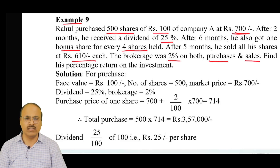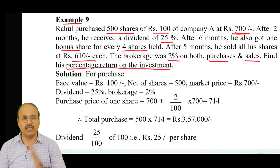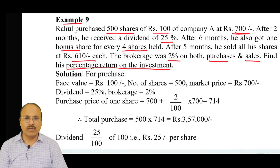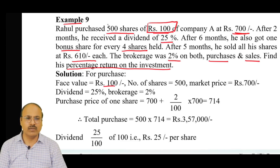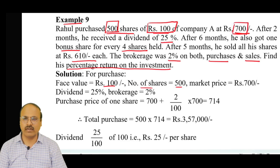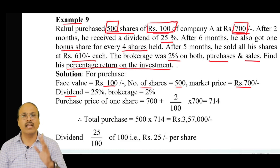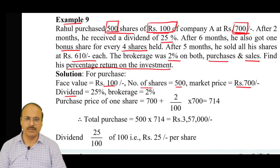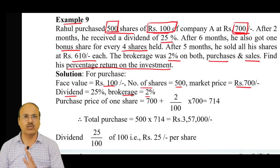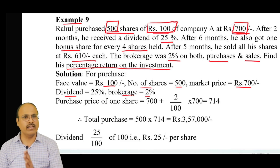We need to find the percentage return on investment. The face value is rupees 100, number of shares purchased is 500, market price at purchase was rupees 700, dividend rate is 25%, and brokerage is 2% for both purchase and sale. Write down all the important given data — this is the problem-solving approach. Then use formulas and calculate everything step by step.